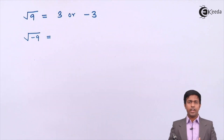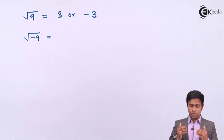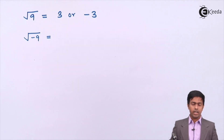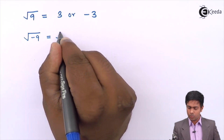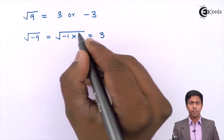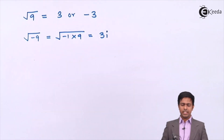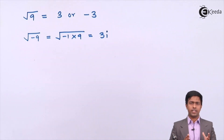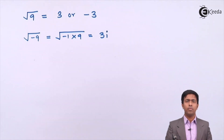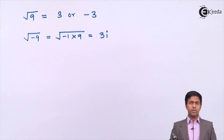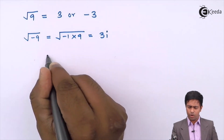So if I want to find the square root of a negative number, I can do it with the help of complex numbers. The square root of negative 9 equals the square root of minus 1 times 9, which gives 3 times the square root of minus 1, written as 3i. Now a complex number is any number given in the form x plus iy.